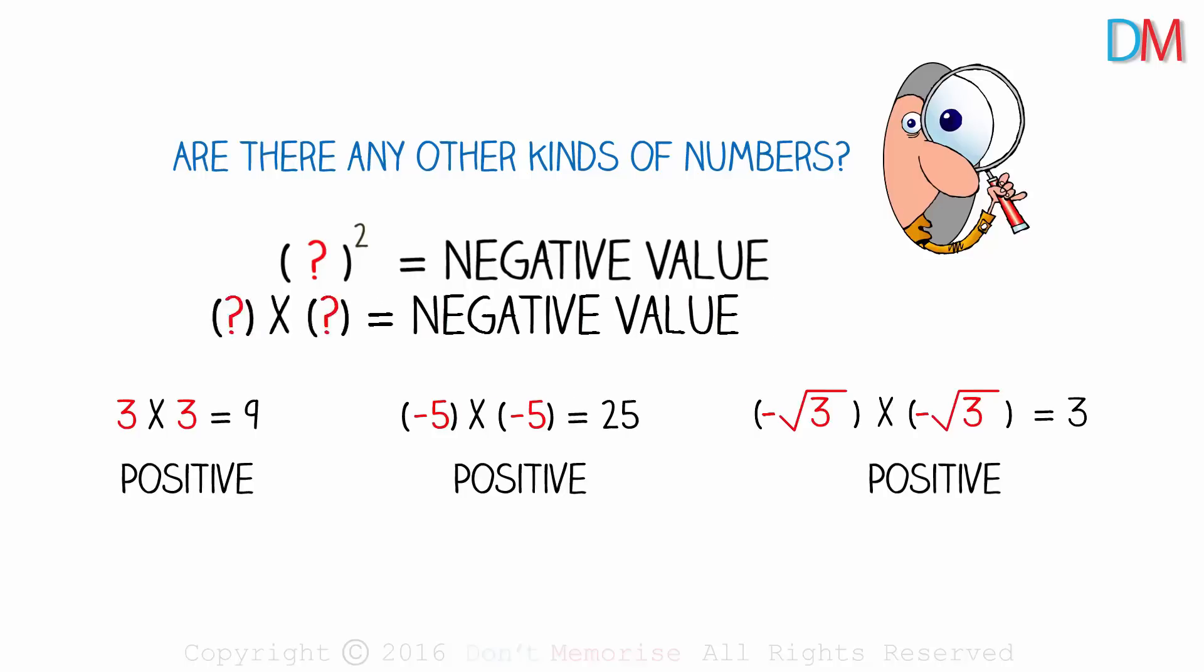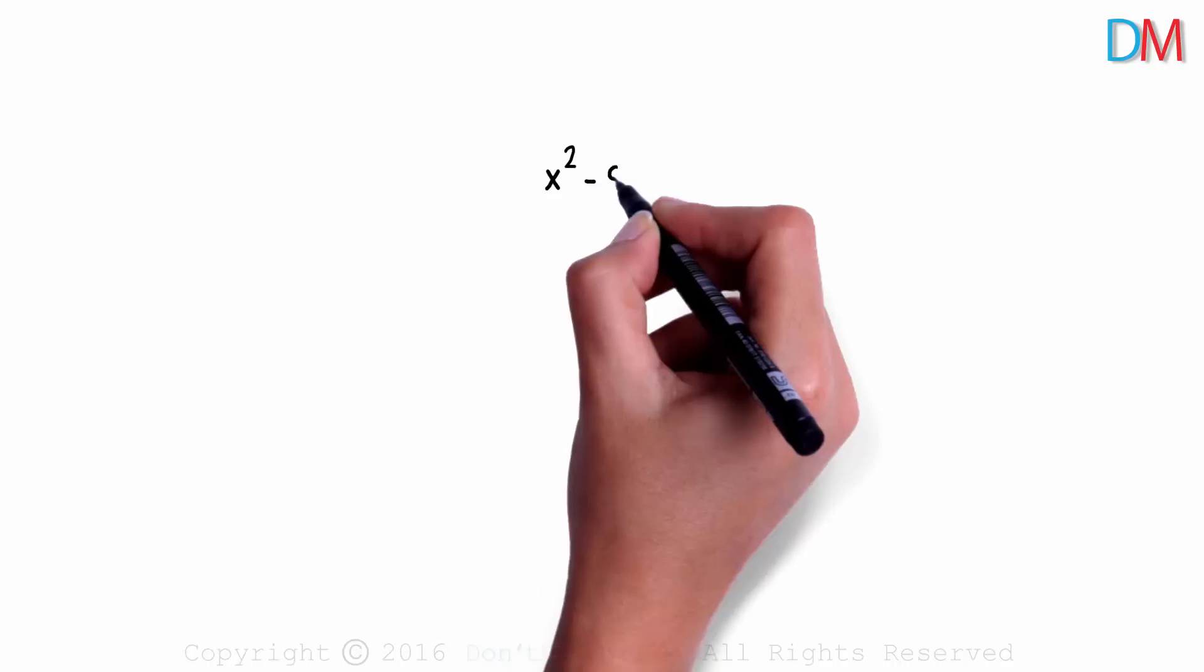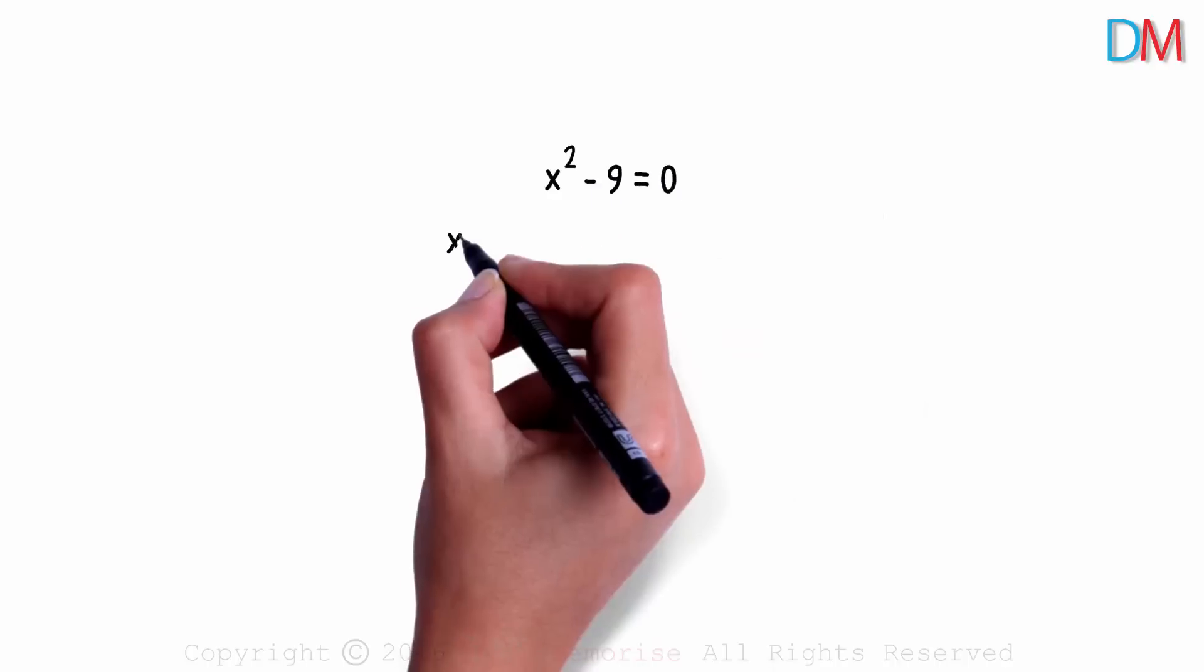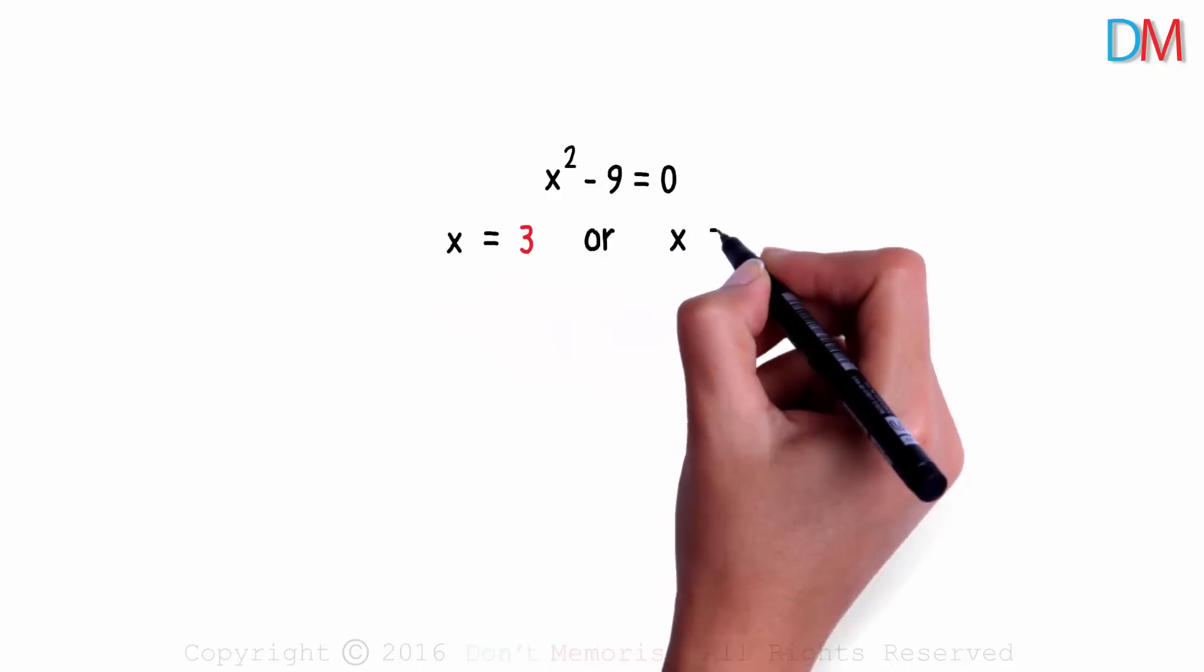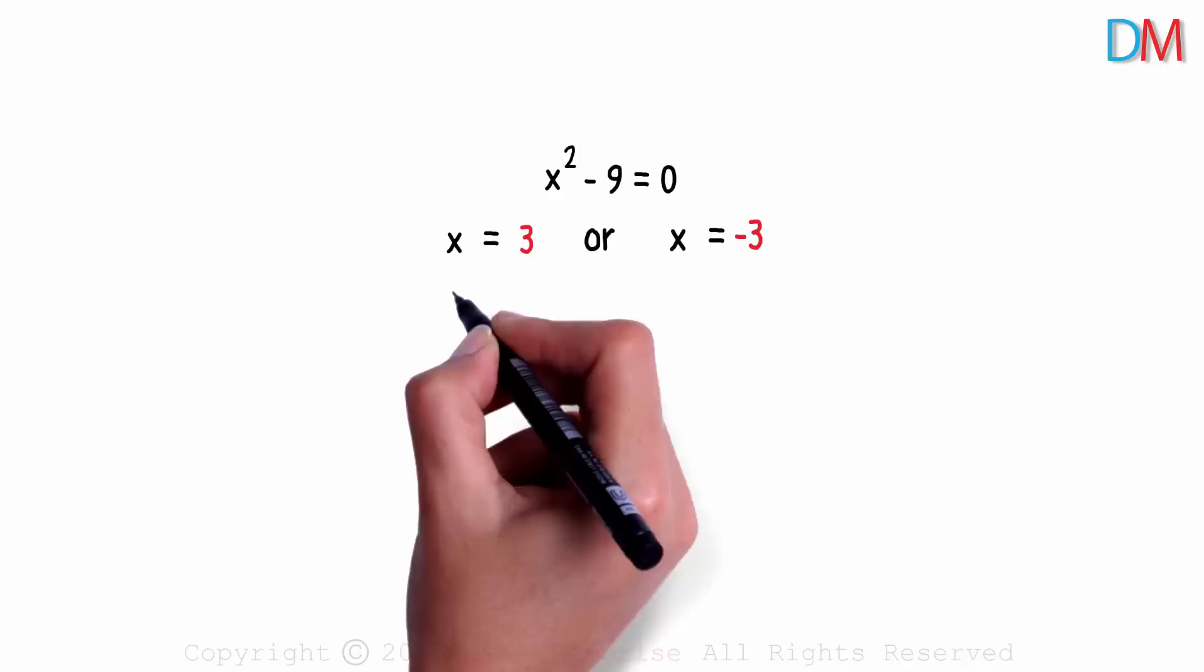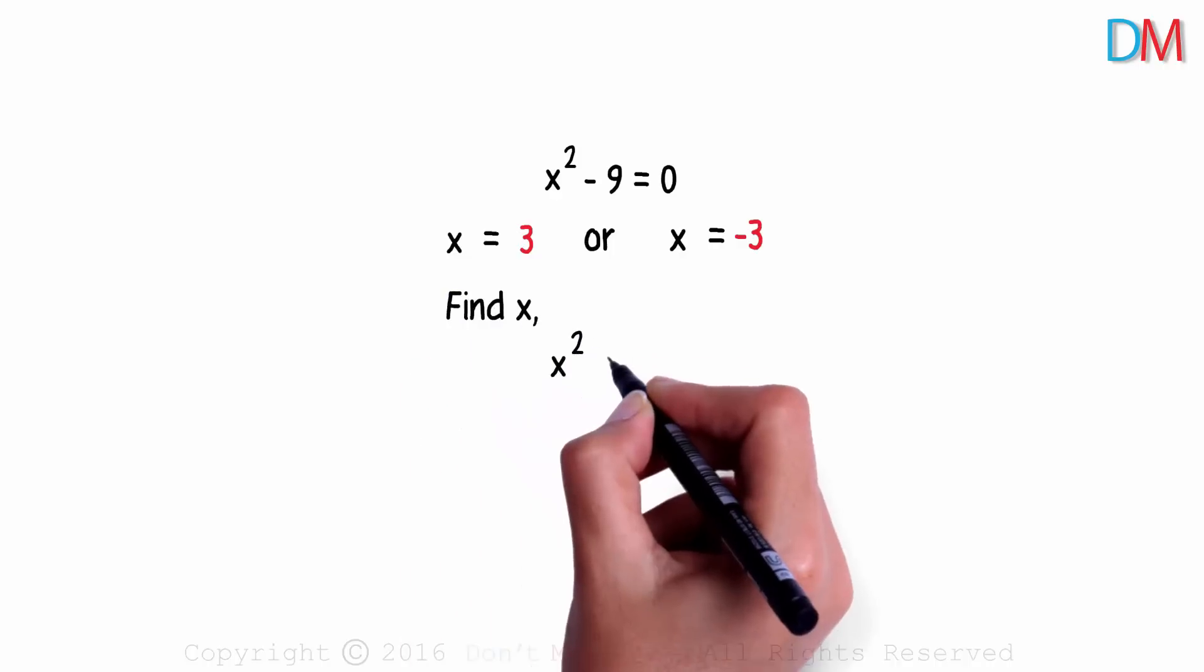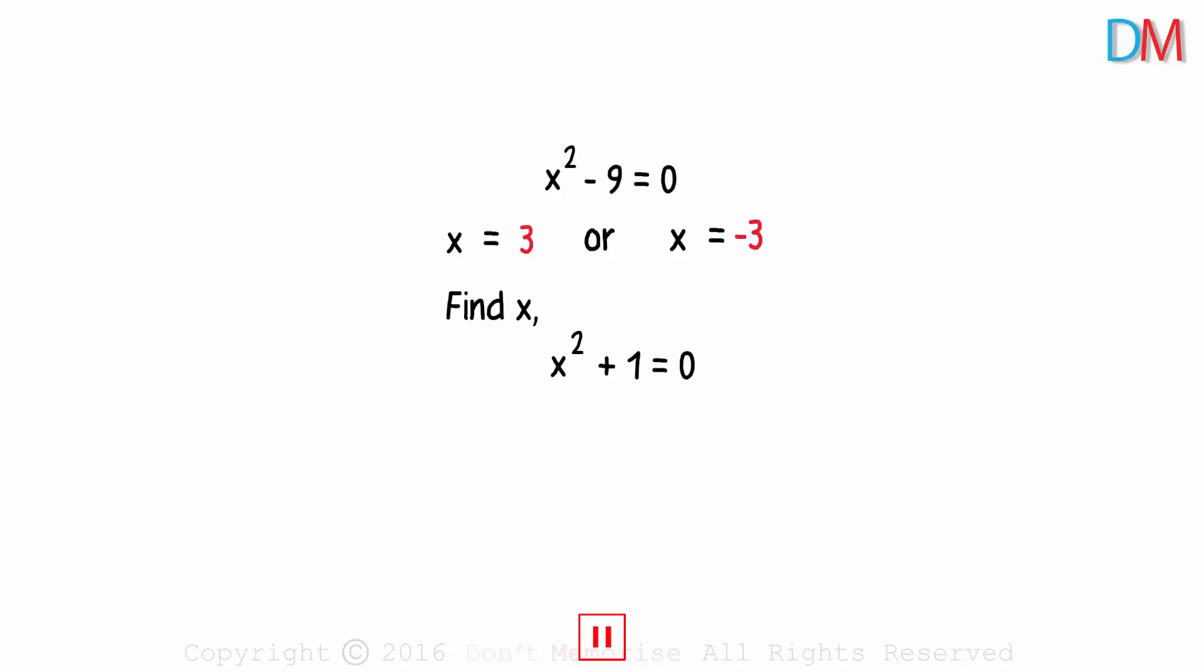We'll come back to this, don't worry. So we've studied quadratic equations in middle school. We know that if x squared minus 9 is equal to 0, x is either equal to 3 or negative 3. Now try to find a solution to x squared plus 1 equal to 0. Not sure? Or do you think there is no solution to this one? Don't worry if you couldn't get the answer to these two questions.